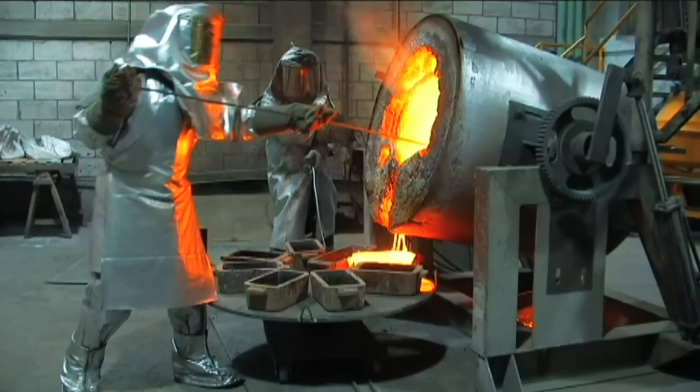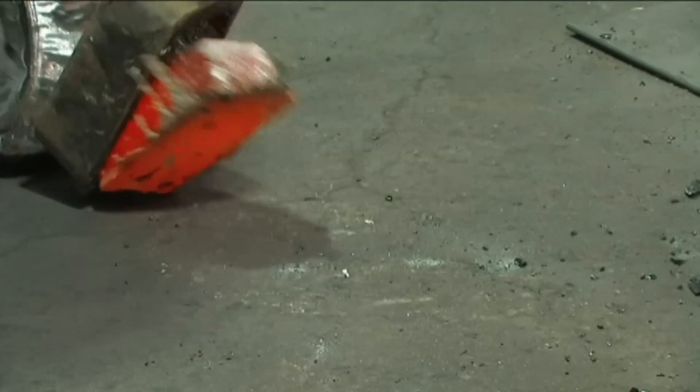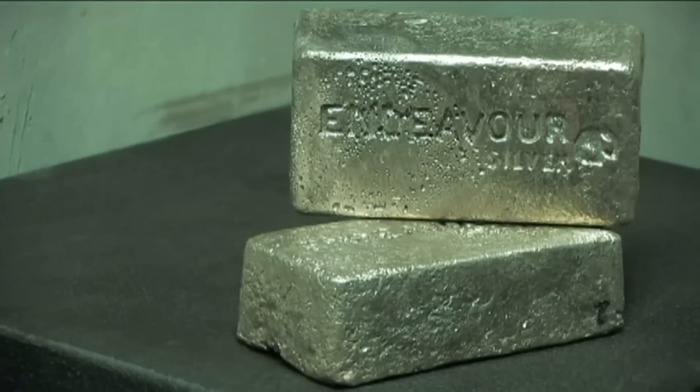Dore bars are semi-pure alloys of gold and silver since small amounts of other metals also precipitate out during the silver cementation process.